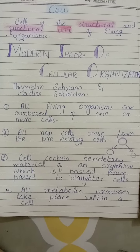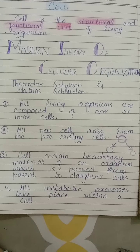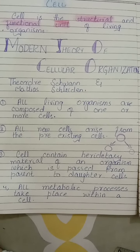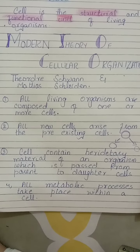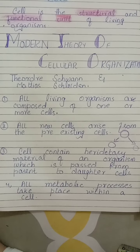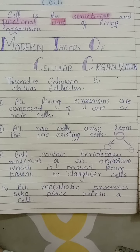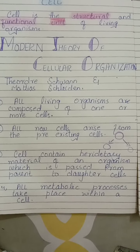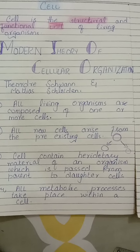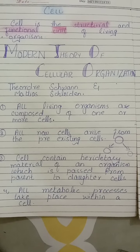کہ all the living organisms are composed of one or more cells. جتنے بھی living organisms ہیں ان کا basic unit cell ہی ہے. وہ ایک cell سے بنے ہوں گے جیسے کہ unicellular organisms — uni means one, cellular means cell — یا پھر بہت سارے cells سے بنے ہوں گے تو پھر وہ کہلائیں گے multicellular organisms. لیکن بنیں گے یہ cells سے، basic unit cell ہوگا.